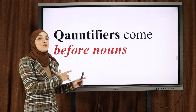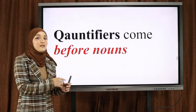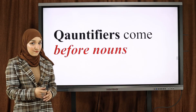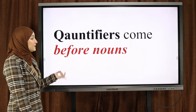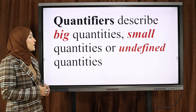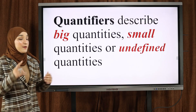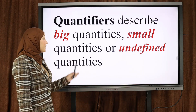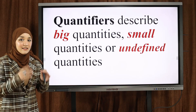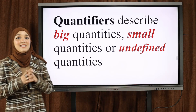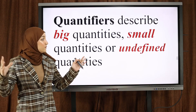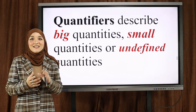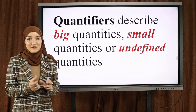Quantifiers come before nouns — تأتي هذه الكلمات قبل الأسماء، ليس قبل الأفعال. Quantifiers describe big quantities, small quantities, or undefined quantities. نستعمل محددات الكمية لنتحدث عن كميات كبيرة، كميات صغيرة، أو كميات غير محددة.